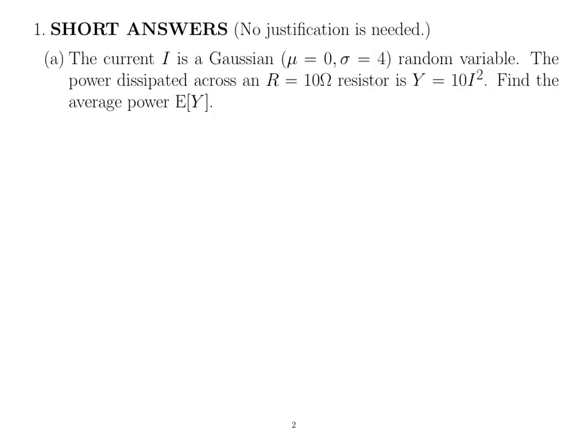So this was a question last year. The current is Gaussian, the average value is zero, the standard deviation is four, and you are asked to find the average power. So the average power: E[Y] = E[10·I²] = 10·E[I²]. There's something here that isn't obvious.